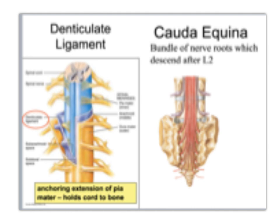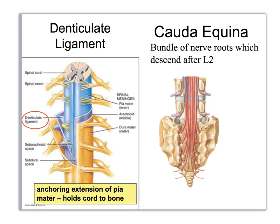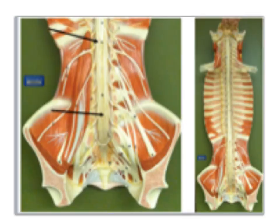Looking more closely, you can see the cauda equina and how the spinal nerves go out through the holes and down through the sacral hiatus. The filum terminale prevents the cord from bouncing up and down. We also have strands called denticulate ligaments, which anchor it to the walls on either side and prevent it from slapping side to side. Both structures are made of pia mater.